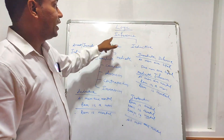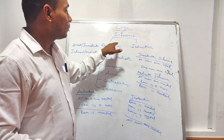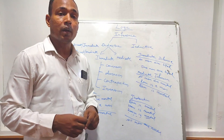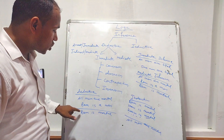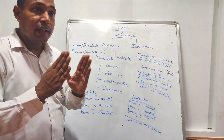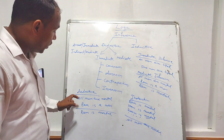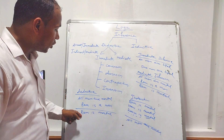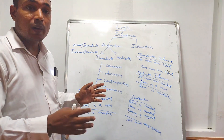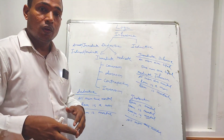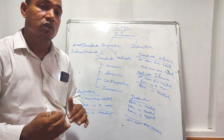Now, inference is divided into deductive and inductive. In deductive inference, we pass from all to some — that is, from general to special, or from known to unknown. It is a descending process.